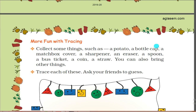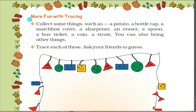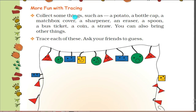Next topic is 'More Fun with Tracing'. Collect some things such as a potato, a bottle cap, a matchbox cover, a sharpener, an eraser, a spoon, a bus ticket, a coin, a straw - you can also bring other things. Trace each of these and ask your friends to guess.